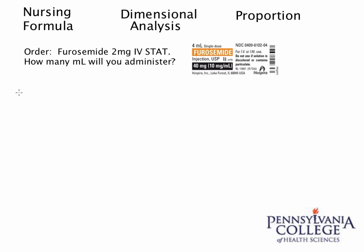In this video I'd like to go over another problem where we are doing a basic dose conversion. We are given the order for furosemide — not sure if I'm saying that right, but that's not the most important part. We need to give 2 milligrams IV stat and determine how many milliliters to administer. We are given the label to the right. I'm going to solve this multiple ways. You can click on the nursing formula, dimensional analysis, or proportion to jump right to that method.